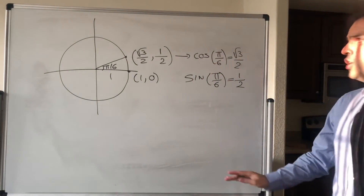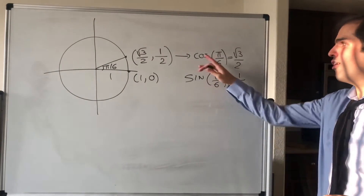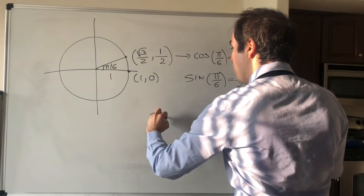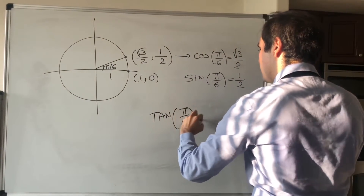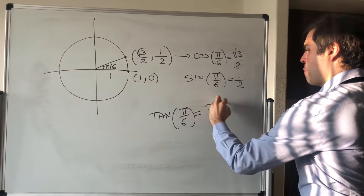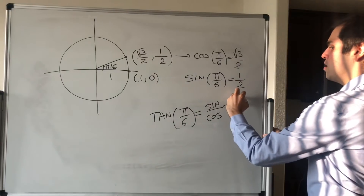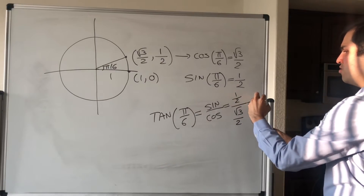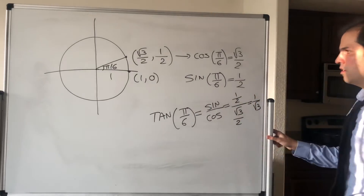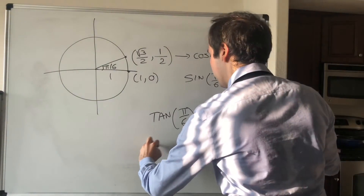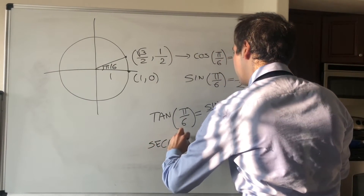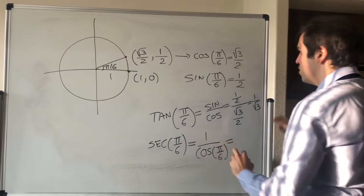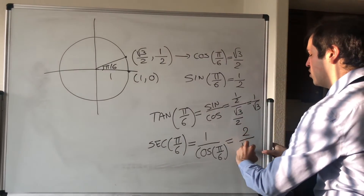You can find tangent and all the other functions very easily using the formulas. For instance, tangent of pi/6 is just sine over cosine, which is (1/2) / (√3/2), and that simplifies to 1/√3. How would you find secant of pi/6? Well, it's 1 over cosine of pi/6, so that gives you 2/√3.